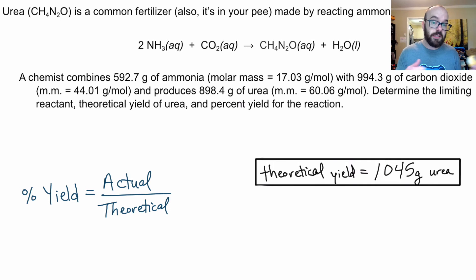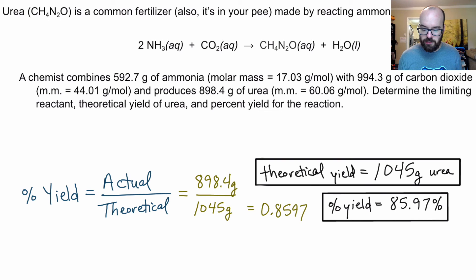Does that mean they did something wrong? Well, not necessarily. There's different factors that affect what yield you're going to get in a reaction. And you'll find when we're actually in the lab doing reactions, we won't get 100% yield. So I'm going to take the actual 898.4 grams, divide by 1,045. And we'll just multiply by 100 and change that into a percentage. And so our percent yield here is 85.97%.